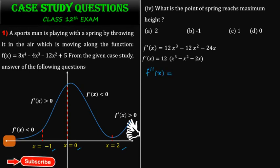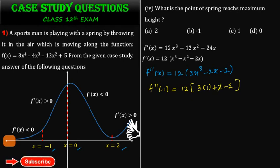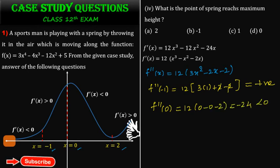f''(x) = 12(3x² - 2x - 2). Substituting x = -1: the value is positive, so it is a local minimum. Substituting x = 0: f''(0) = 12(0 - 0 - 2) = -24, which is negative. Substituting x = 2: the value is positive, so it is also a local minimum.